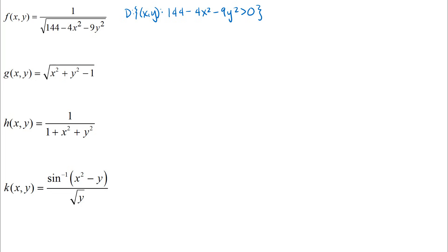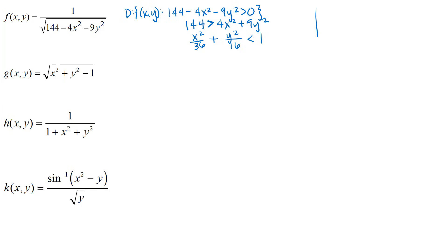Working with that inequality, I'll add 4x² and 9y² to both sides to get 144 > 4x² + 9y². I might recognize that if there were an equal sign, that would be an ellipse. So I'll divide through by 144 and rearrange: 4x²/144 reduces to x²/36, and 9y²/144 reduces to y²/16, giving me x²/36 + y²/16 < 1, making sure the inequality is pointing in the correct direction.